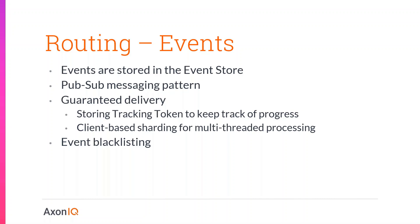As of Axon 4.2 we also support event blacklisting, driven by the client. As soon as the client receives a message it does not understand, it sends a notification to Axon Server to not send that message again. This allows for massive I/O optimization when consumers of an event stream are only interested in a small portion of the events. All this information is ephemeral - if a connection is closed and reopened, the blacklist is gone and has to be rebuilt. This is a safeguard to ensure that when you upgrade an application and do want to listen to new events, you don't have to tweak anything.